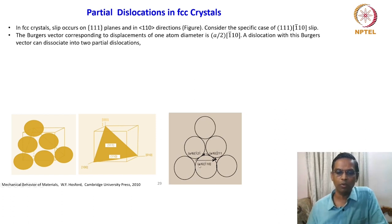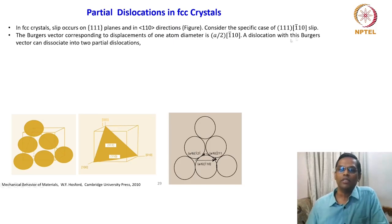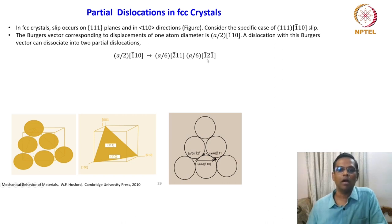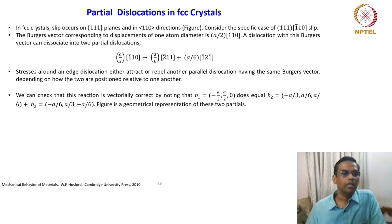So this is A/2. There is a typo here — it is written as A/6, but it should be A/2[1̄10]. That is a correction. A dislocation with this Burgers vector can dissociate into two partial dislocations: A/2[1̄10] can dissociate into A/2[1̄11] plus A/6[1̄2̄1]. There should be a plus sign there — that is also a typo, please correct it.